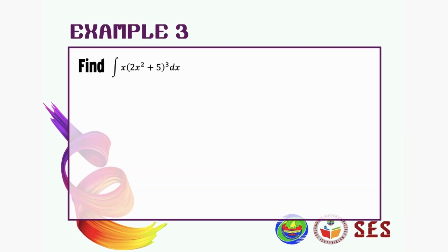Question number three: we have x multiplied with 2x squared plus 5 to the power of 3 dx. From the hint, we can let the functions inside become u because this one has power 3.